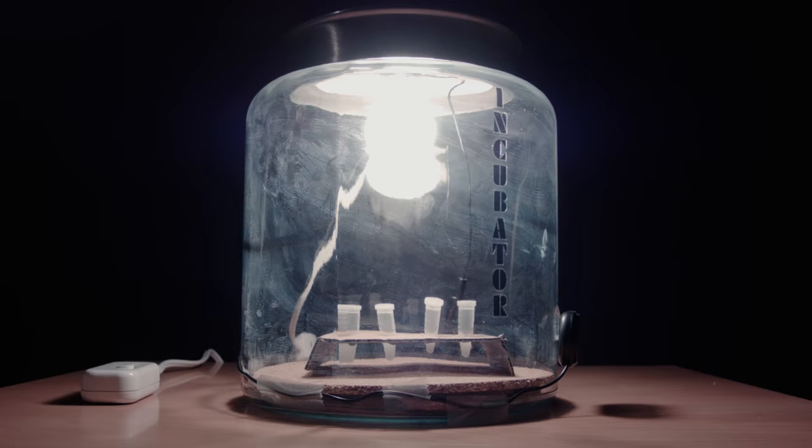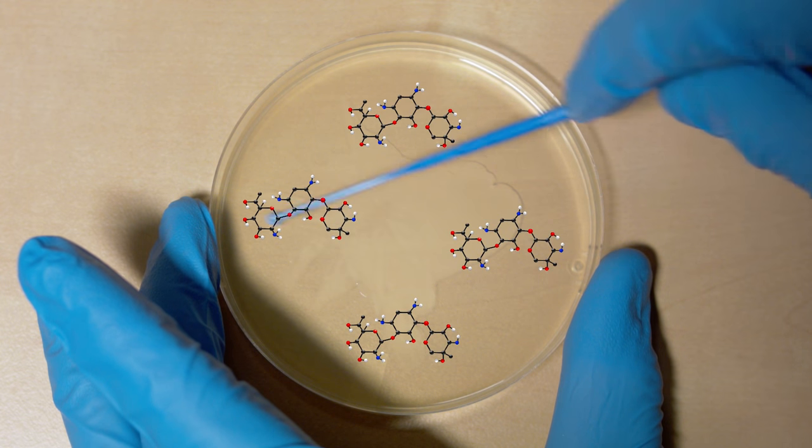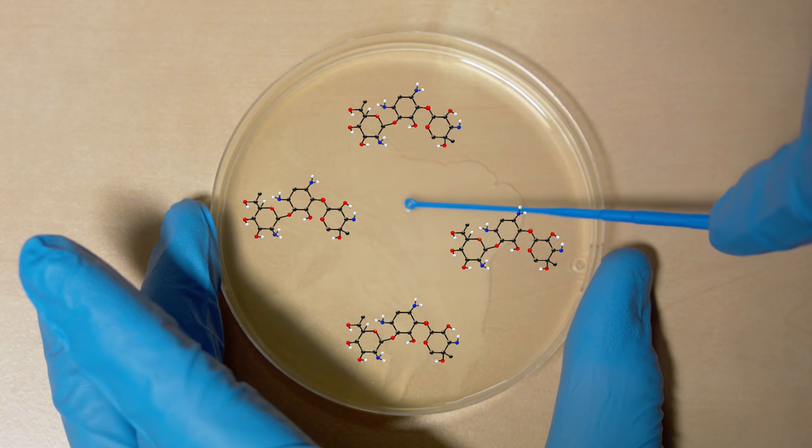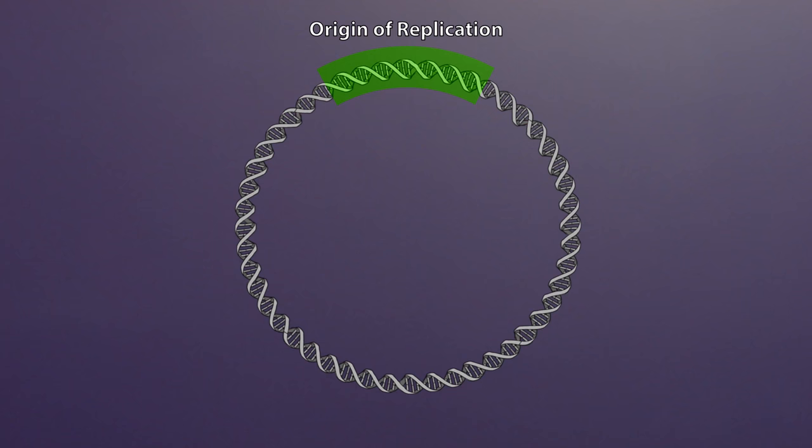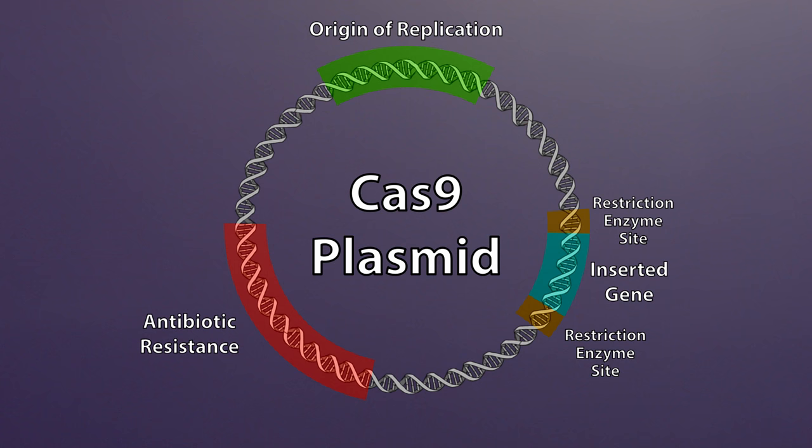After this round of incubation, the modified yeast will be spread onto a YPD agar plate with G418, or Geneticin, an antibiotic. If the yeast doesn't replicate with the GFP plasmid, it will therefore not have the antibiotic resistance and won't be able to grow on the plate. Lastly, the insert, sandwiched between restriction enzyme sites, is where you can insert the gene you want replicated: the green fluorescent protein for yeast, the Cas9 protein, and guide RNA for the E. coli experiment.